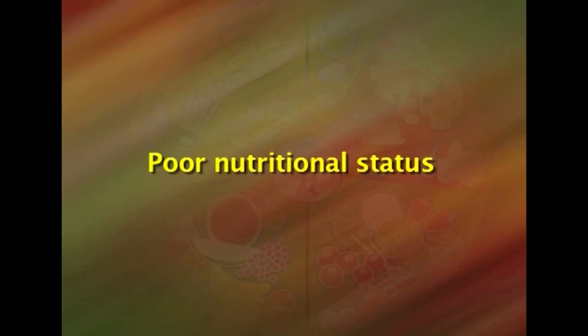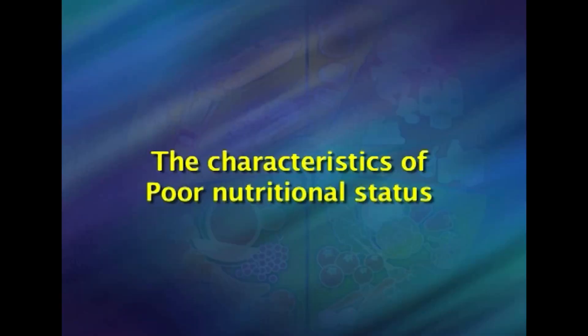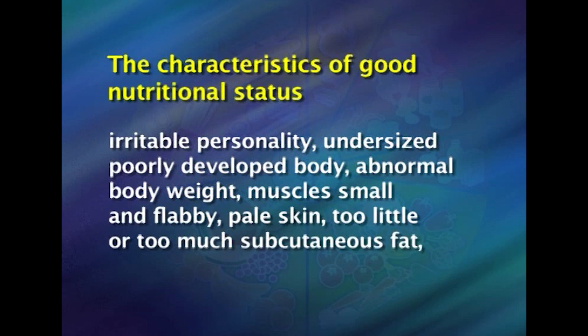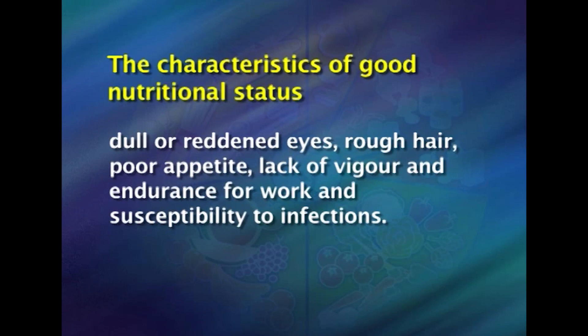The characteristics of poor nutritional status are irritable personality, undersized and poorly developed body, abnormal body weight, poor and small muscles, pale skin, very little or too much subcutaneous fat, reddened eyes, rough hair, poor appetite, and lack of vigour and endurance for work, along with susceptibility to infections.